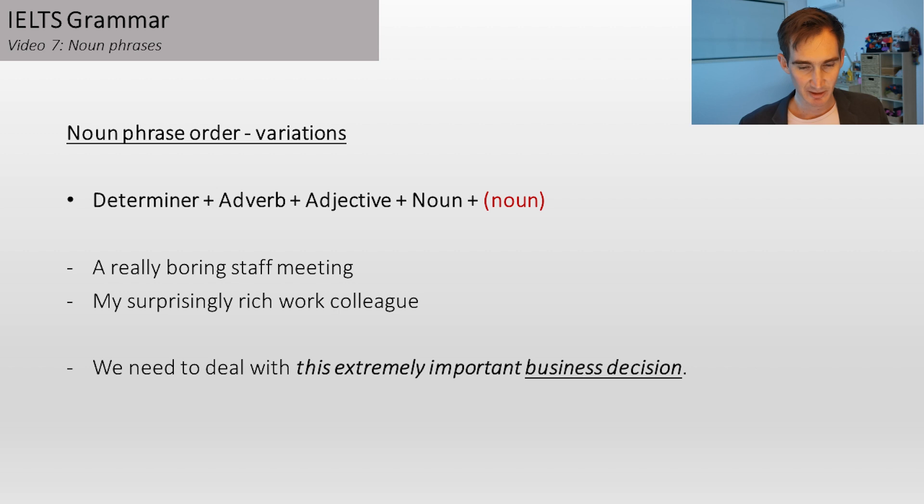Another variation on this structure is when you have that compound noun that I talked about earlier, right at the end of your noun phrase. So it might be determiner adverb adjective noun, but maybe it's a compound noun, noun plus noun. Examples would be a really boring staff meeting. My determiner, surprisingly adverb, rich adjective, work colleague compound noun.